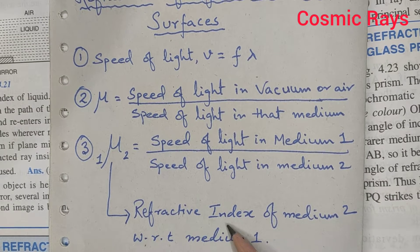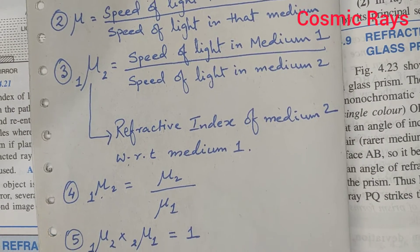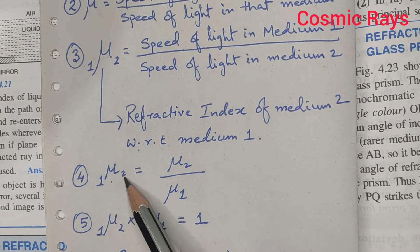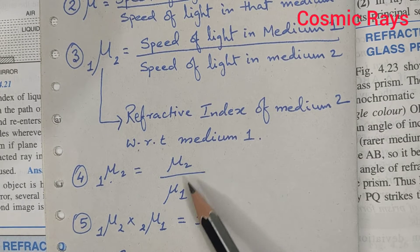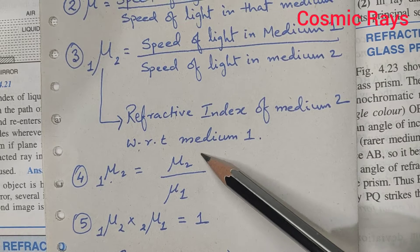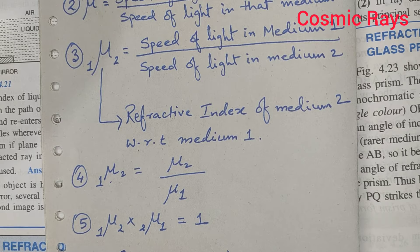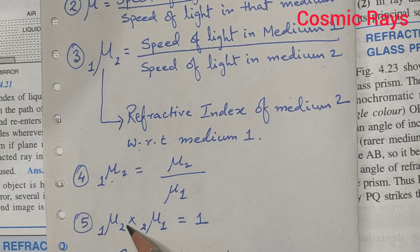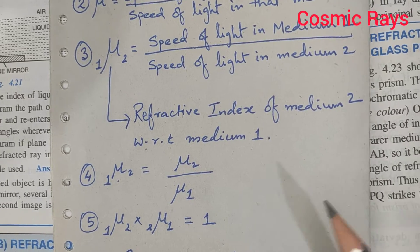So here I have written refractive index of medium 2 with respect to medium 1. Now, refractive index of medium 2 with respect to medium 1 — if the speed of light is not given and we have been given the refractive index of two different mediums — then that is given as refractive index of medium 2 divided by refractive index of medium 1. We also have to remember that refractive index of medium 2 with respect to medium 1 multiplied by refractive index of medium 1 with respect to medium 2 is always equal to 1.